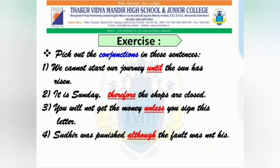Children, let's practice what we have learnt. Pick out the conjunctions in these sentences. First: We cannot start our journey until the sun has risen — 'until' is the subordinating conjunction. Second: It is Sunday, therefore the shops are closed — 'therefore' is the conjunction. Third: You will not get the money unless you sign this letter — 'unless' is the subordinating conjunction. Fourth: Sudhir was punished, although the fault was not his — 'although' is the subordinating conjunction.